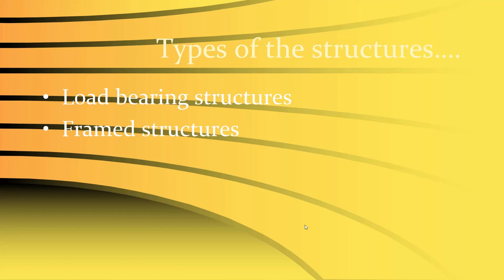In load bearing structures, the width of walls is quite large to carry the heavy load. In modern frame structures, wall size is less because walls serve as partitions only and are not load-bearing — load is transferred by columns and beams only. This gives us the advantage of making changes by removing walls, which is not possible in load bearing structures.